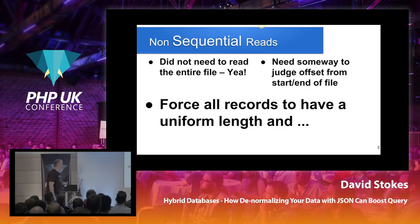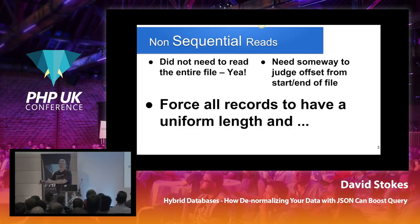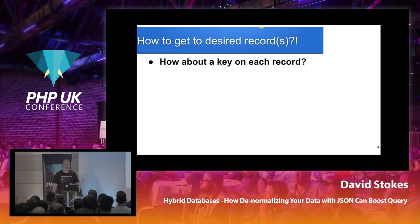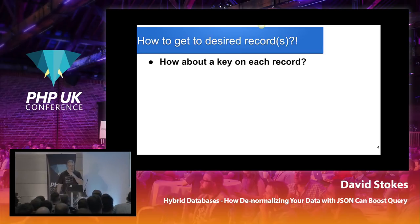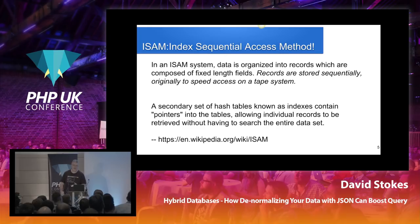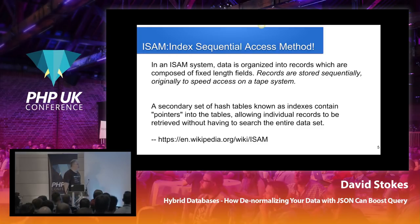The first step was to force all records to have a uniform length. Because if everything's a uniform length — say it's 100 bits long — you know at bit 101 the second record starts. They started figuring out ways to get hashes or keys into each record and use that index as a map to get to the records you wanted. In the mid-50s and early 60s, they came up with index sequential access method, where records were made into logical size blocks, all the same size.